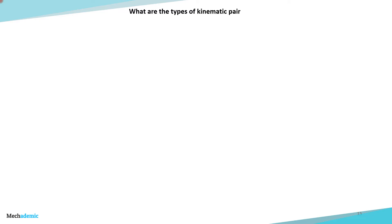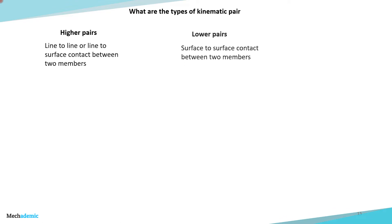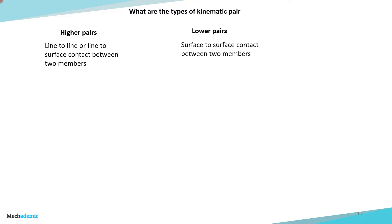Understanding the different types of kinematic pairs, or different types of connections between links, is a very important concept in kinematics. So let us understand the different types of kinematic pairs. Broadly they are classified into two areas: higher pairs and lower pairs. This classification is based on the nature of contact between the two links. If there is line-to-line contact or line-to-surface contact between two links, it is called a higher pair.